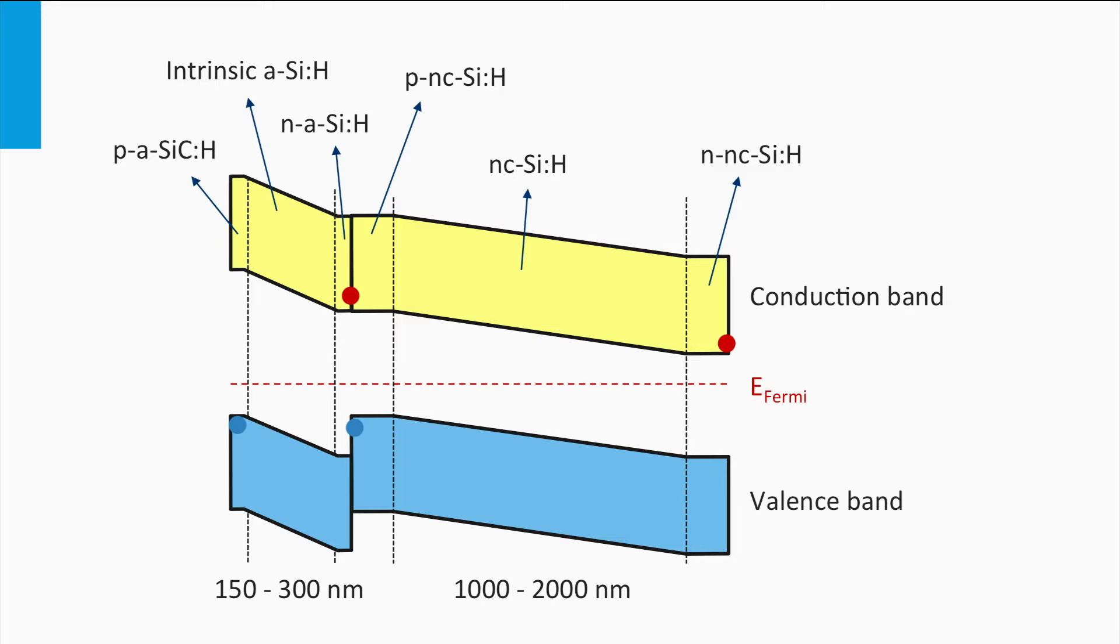Similar to the 3-5 multijunction, the electrons and holes have to recombine at the recombination tunnel junction between the n-layer of the top cell and the p-layer of the bottom cell. Often, a very thin and defect-rich layer acts like a tunnel recombination junction here. Here these electrons and holes recombine.